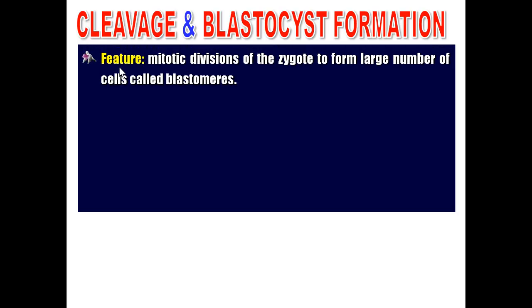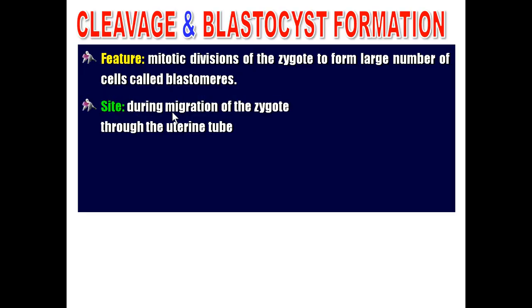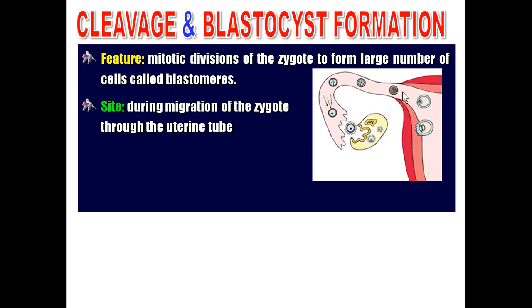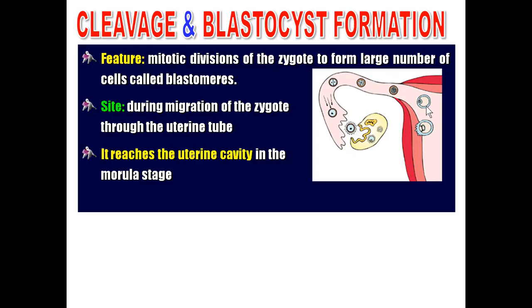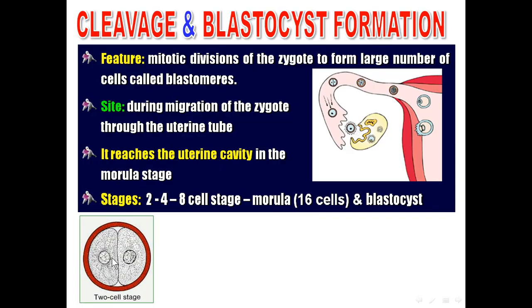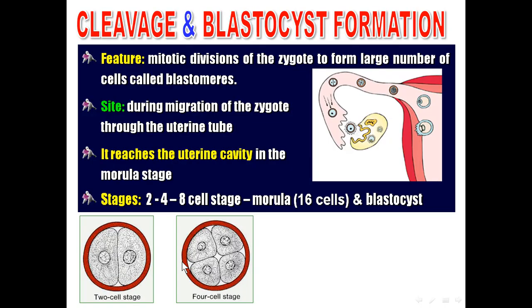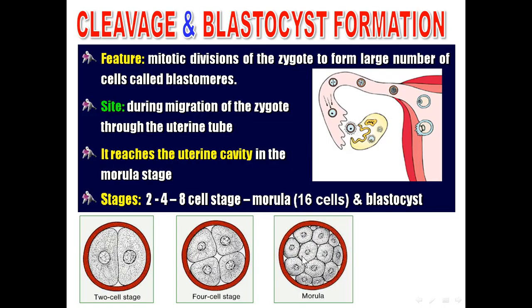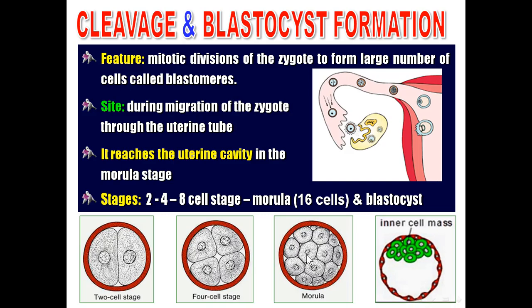Cleavage is repeated mitotic divisions of the zygote to increase the number of its cells, which are called blastomeres. Cleavage occurs during the migration of the zygote in the uterine tube to reach the uterine cavity. The zygote reaches the uterine cavity at the morula stage. The stages are: 2-cell, 4-cell, 8-cell, then 16-cell — and the 16-cell stage is called the morula — and then the blastocyst.